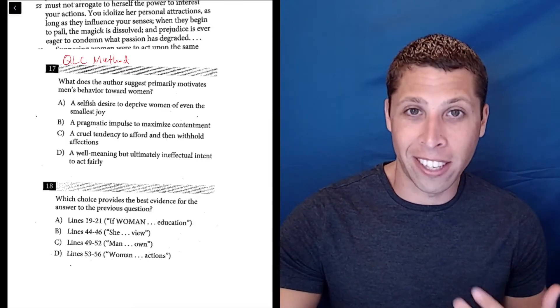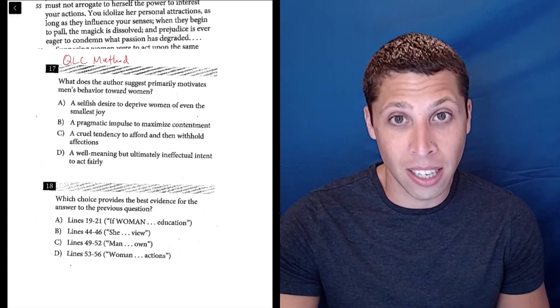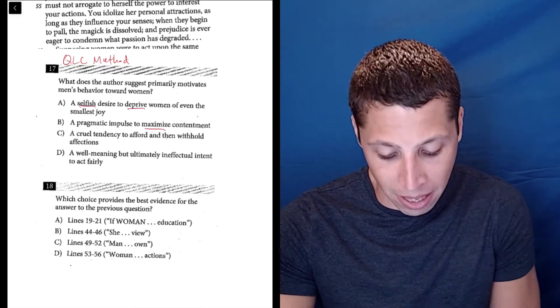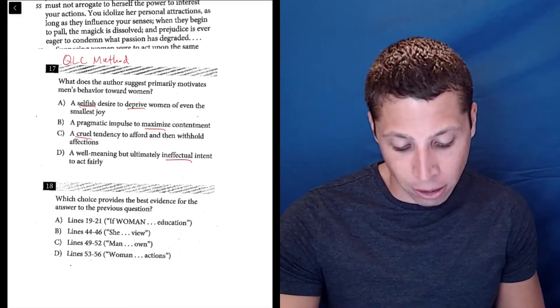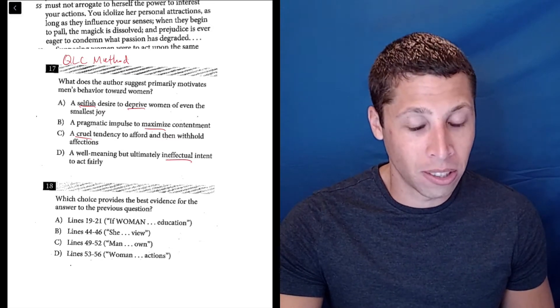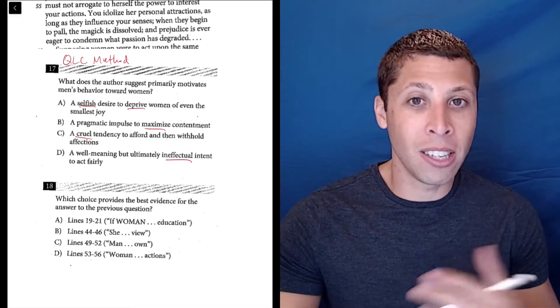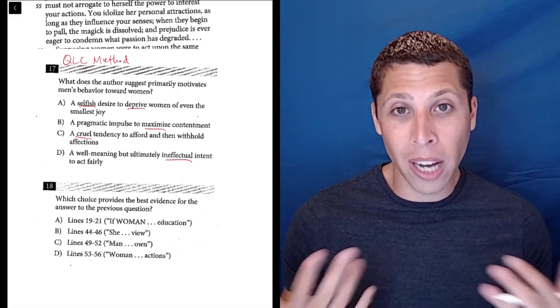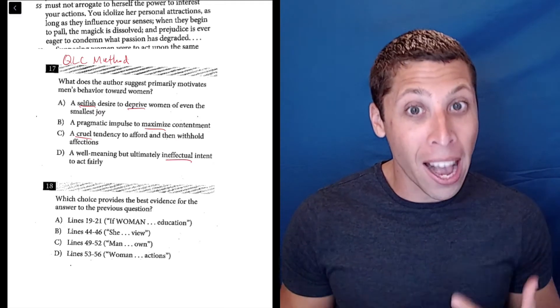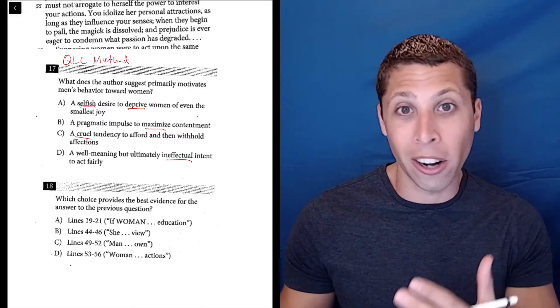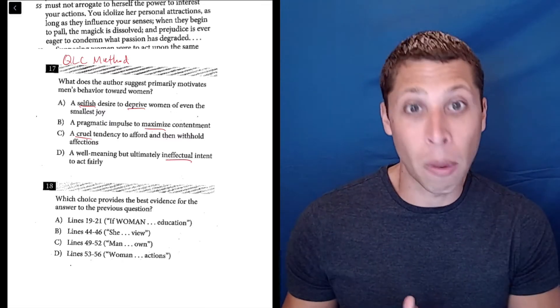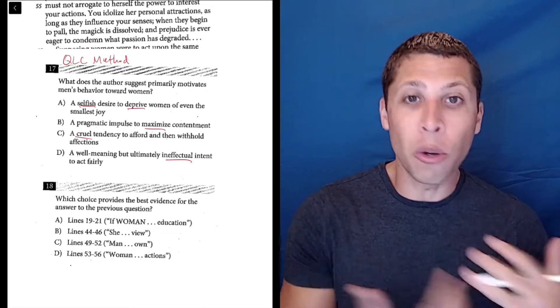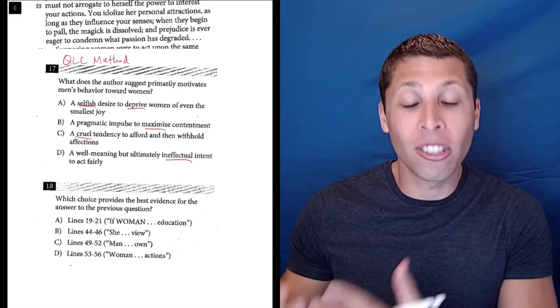I do want to point one thing out right away that makes this very scary as an SAT question: every single answer choice in number 17 has some sort of strong word—selfish, depriving women, pragmatic impulse to maximize contentment, a cruel tendency, a well-meaning but ultimately ineffectual intent. These are all very strong words. Normally if we're looking at choices and we see strong choices, they're probably wrong. Sometimes the passage justifies them, but usually not.